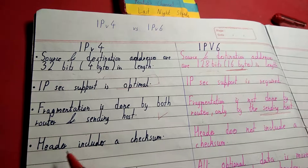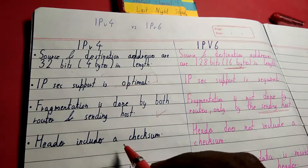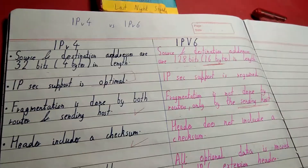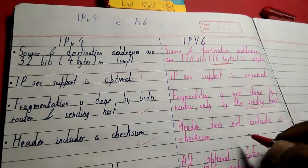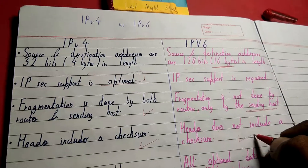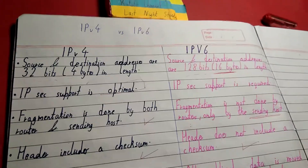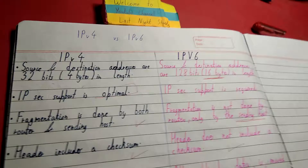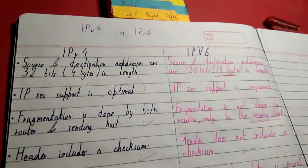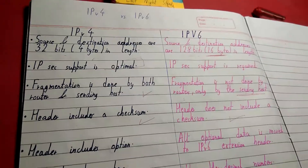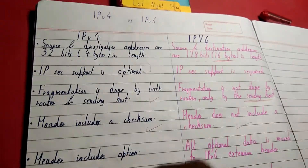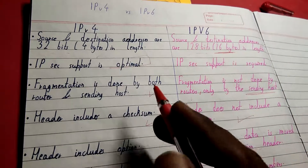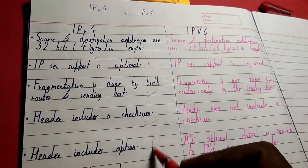In IPv4, the header includes a checksum. But in IPv6, the header does not have a checksum — it may have an optional one, but it is not part of the main header.